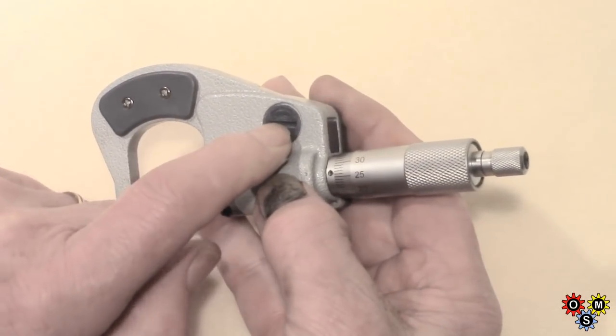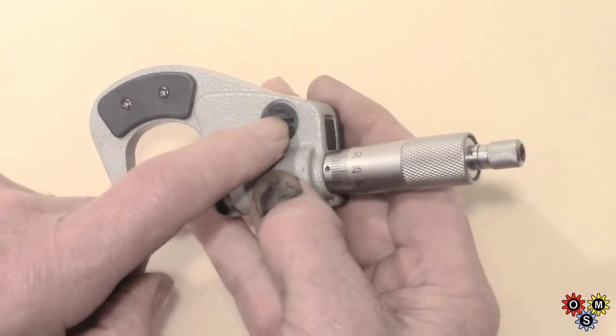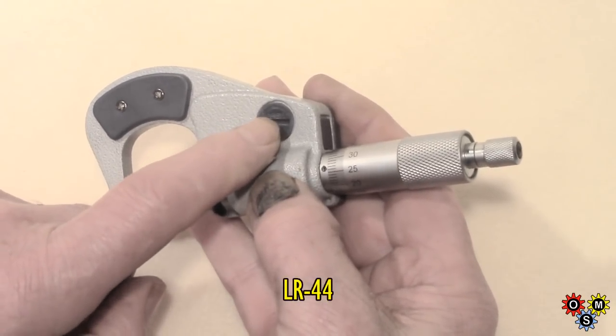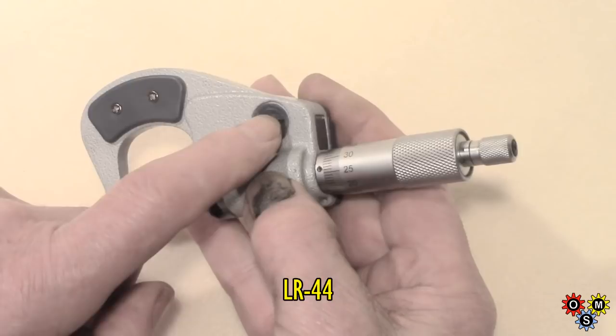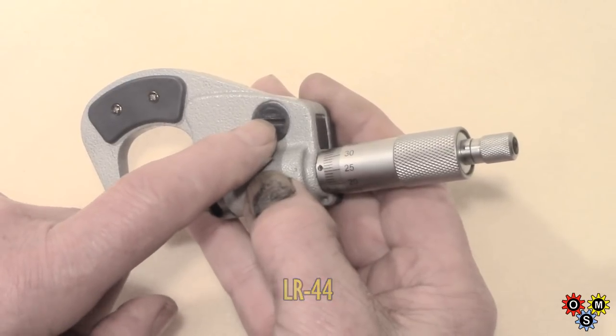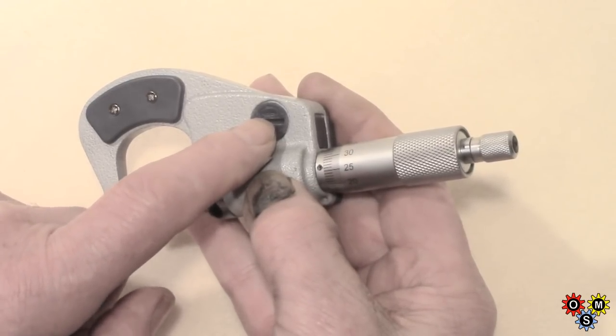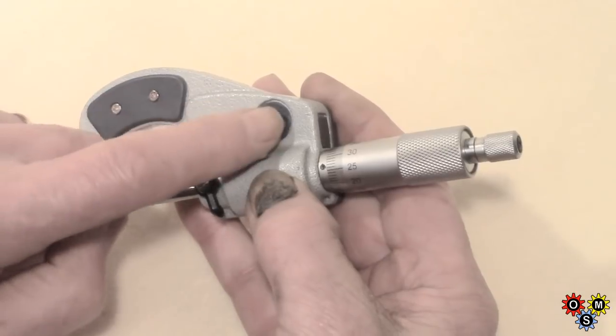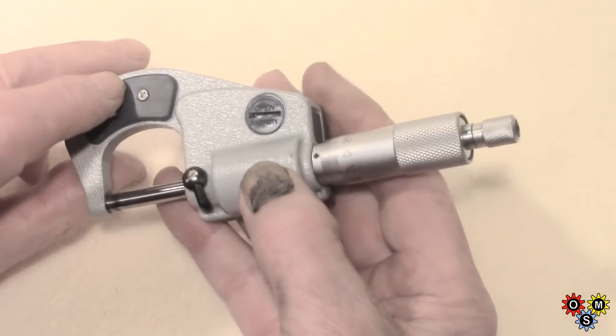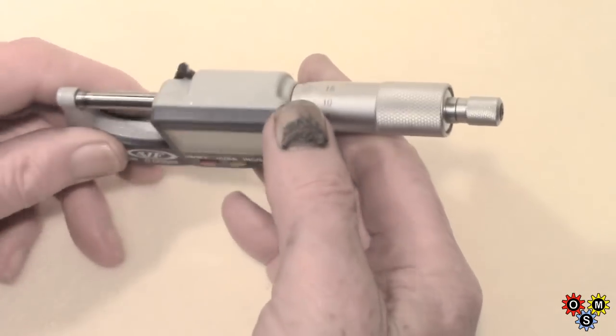We've got a battery compartment here, which is an LG 44, which is a very common battery, which is nice to know. So I think an equivalent of it is a 357. Anyway, nice and easy, nothing too special there. Nice common battery.